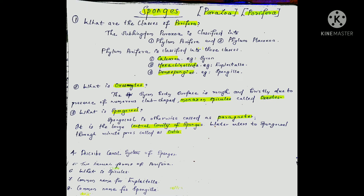Next is the spongocoel. The spongocoel is the central cavity of sponges. Water enters the sponge through minor pores called ostia and moves through the water canal system. The water canal system means the spongocoel is a central cavity connected to a common opening called the osculum.